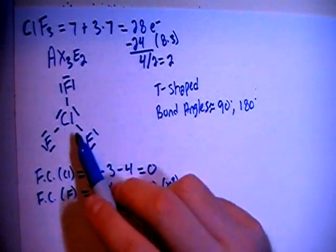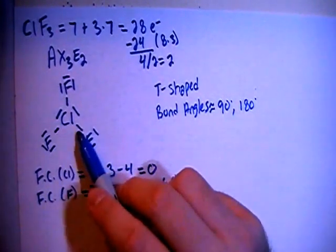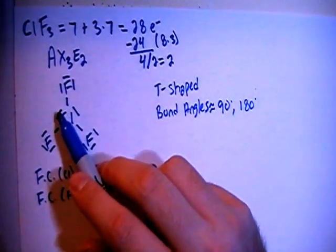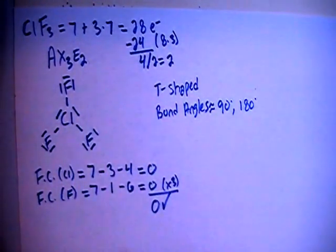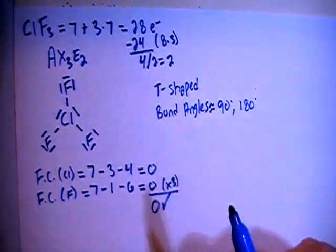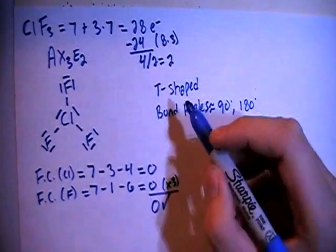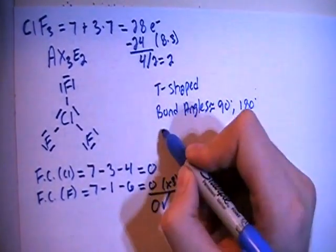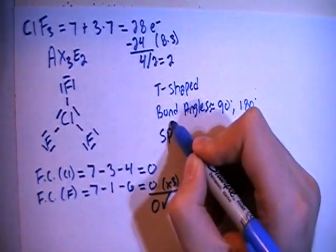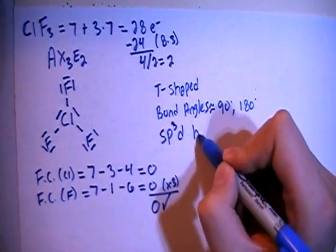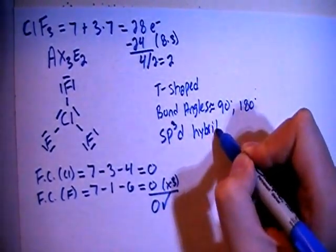In terms of hybridization, looking at the central chlorine, there is 1, 2, 3, 4, 5. So a total of 5 different electron groups or potential bonding sites. So that means we need 5 hybrid orbitals. So we're going to go with sp3d hybrid.